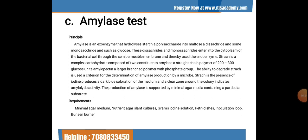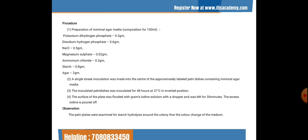In the presence of iodine, starch produces a dark blue coloration of the medium, and a clear zone around the colony indicates amylolytic activity. The amylase test is supported by minimal agar media. Requirements include: minimal agar media, nutrient agar slant culture, Gram's iodine solution, petri dishes, inoculation loop, and burner. The media composition includes KH₂PO₄ 0.3 g, Na₂HPO₄ 0.6 g, NaCl 0.5 g, MgSO₄ 0.02 g, ammonium chloride 0.2 g, starch 0.8 g, and agar 2 g.